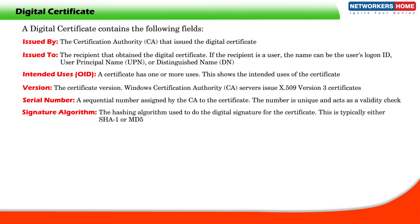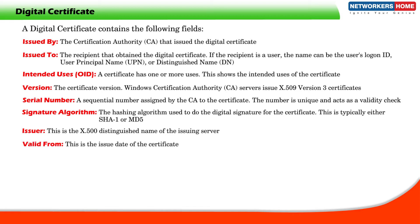Signature algorithm: The hashing algorithm used to create the digital signature for the certificate. This is typically either SHA-1 or MD5. Issuer: This is the X.500 distinguished name of the issuing server. Valid from: This is the issue date of the certificate. Valid to: This important field defines the expiry date of the certificate.